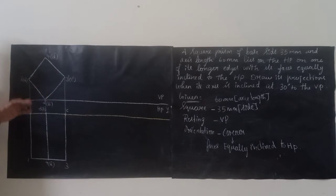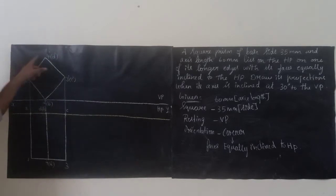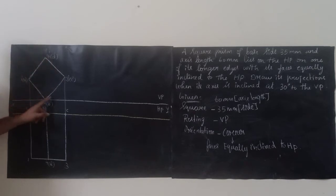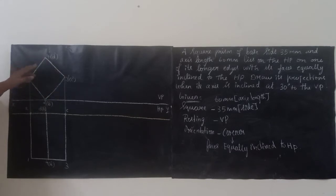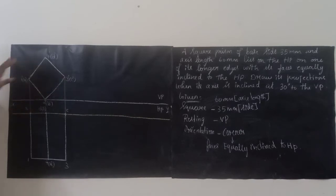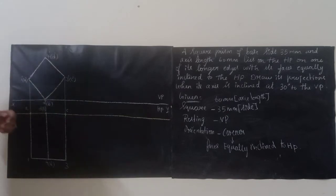First step: don't draw the XY line yet. We need to draw this square on the XY line, so my suggestion is to draw the square first, then draw the XY line — it will be easier. We know the side of the square is 35mm. Draw a straight line at 45 degrees because it is equally inclined — all angles will be 45 degrees. Keep your point tilted, draw a line at 45 degrees, and at 45 degrees draw another line. The length is 35mm. Then draw perpendicular lines of 35mm on each side to complete the square.